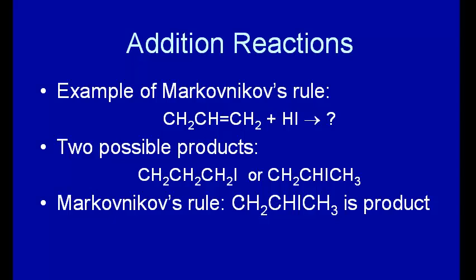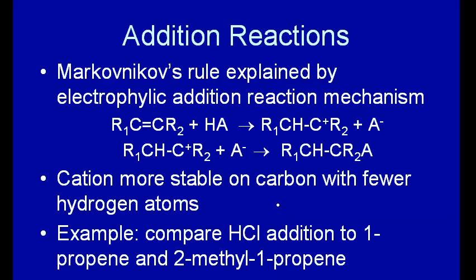And so therefore the product is the H goes to the end here where there's two H's, and then the iodide goes to where there's only one hydrogen right there. Now what we want to do is try to understand this based upon an electrophilic addition reaction mechanism. Why does the hydrogen go to the carbon that has the most hydrogens?